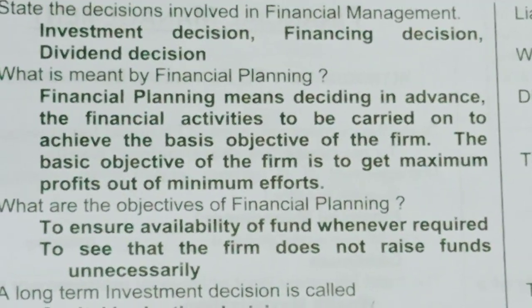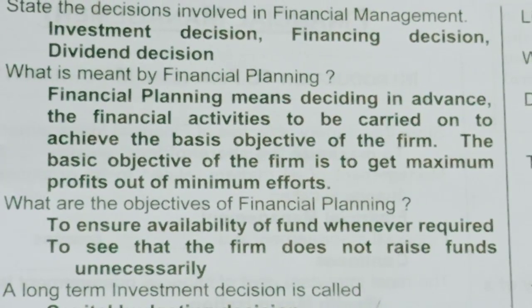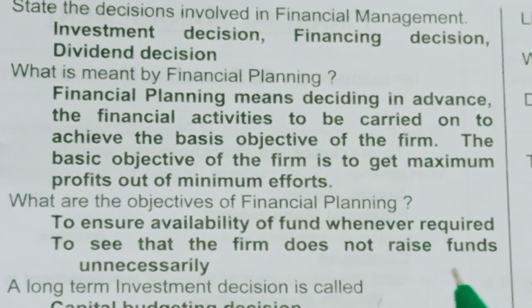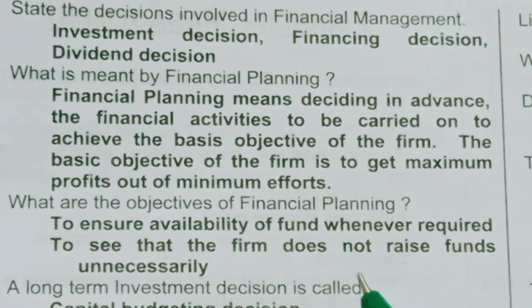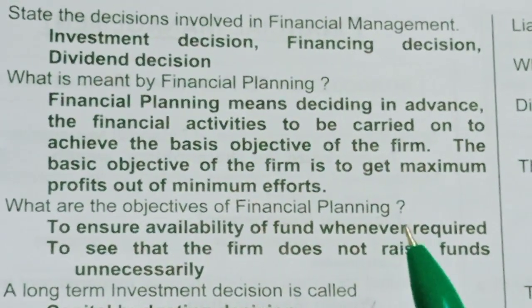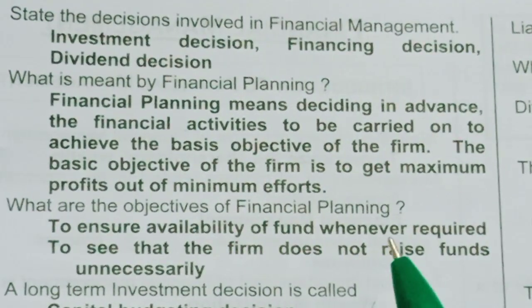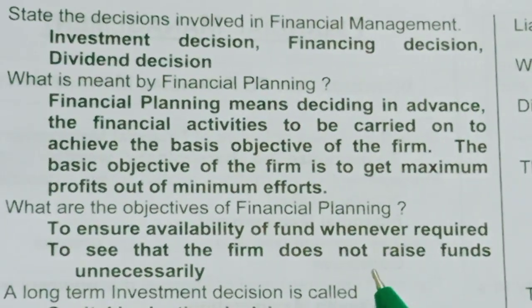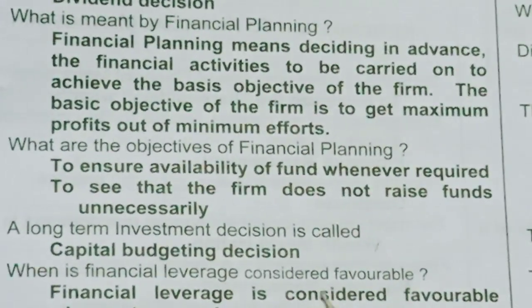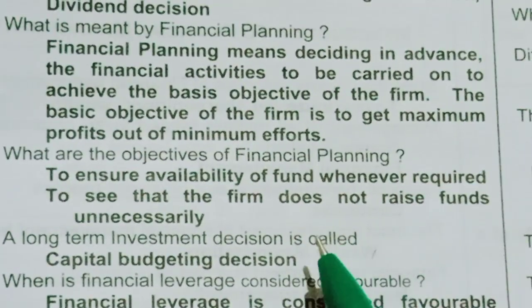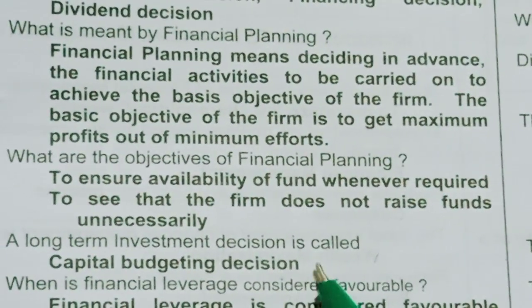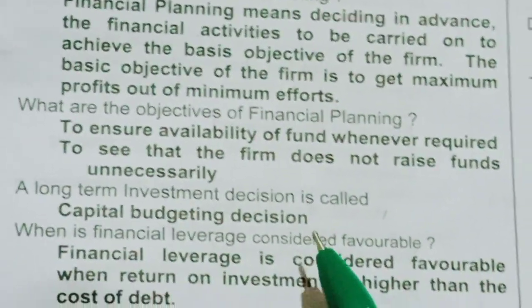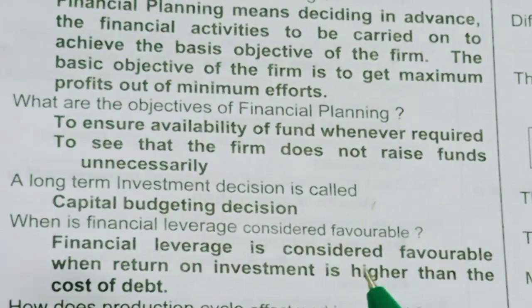Objectives of financial planning: to see that the firm does not raise funds unnecessarily, and to ensure availability of funds whenever required. A long-term investment decision is called a dash — answer: a capital budgeting decision.